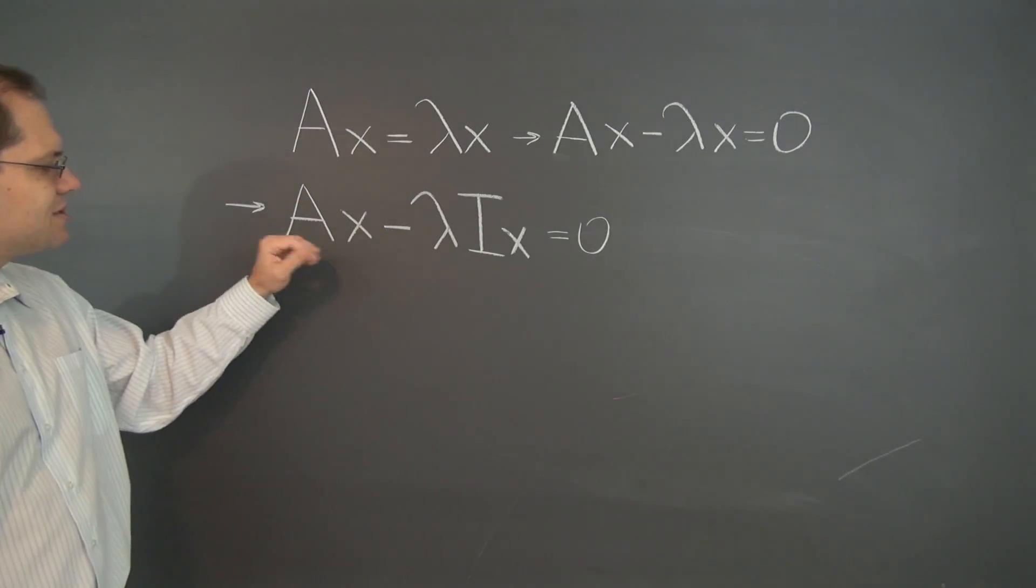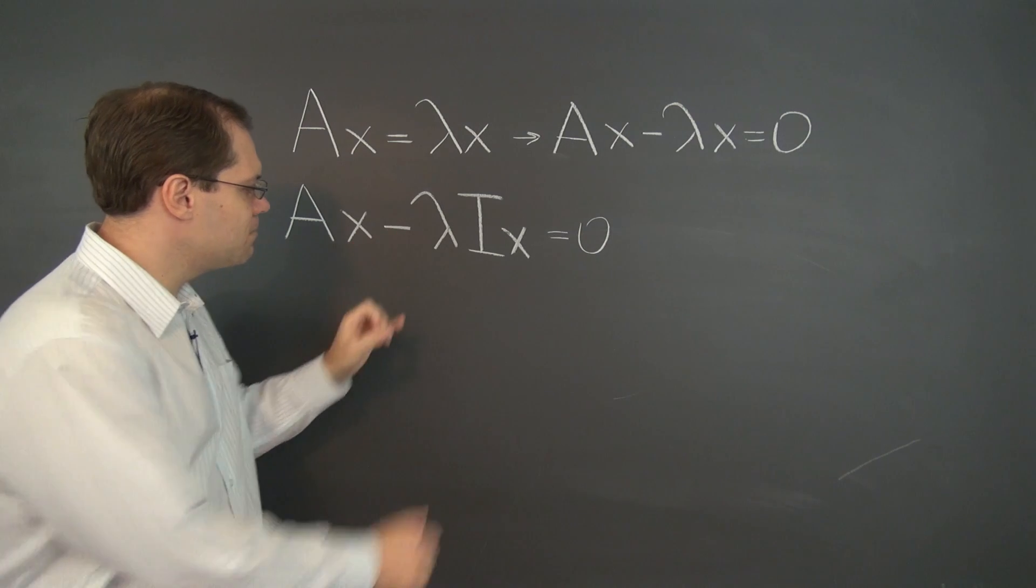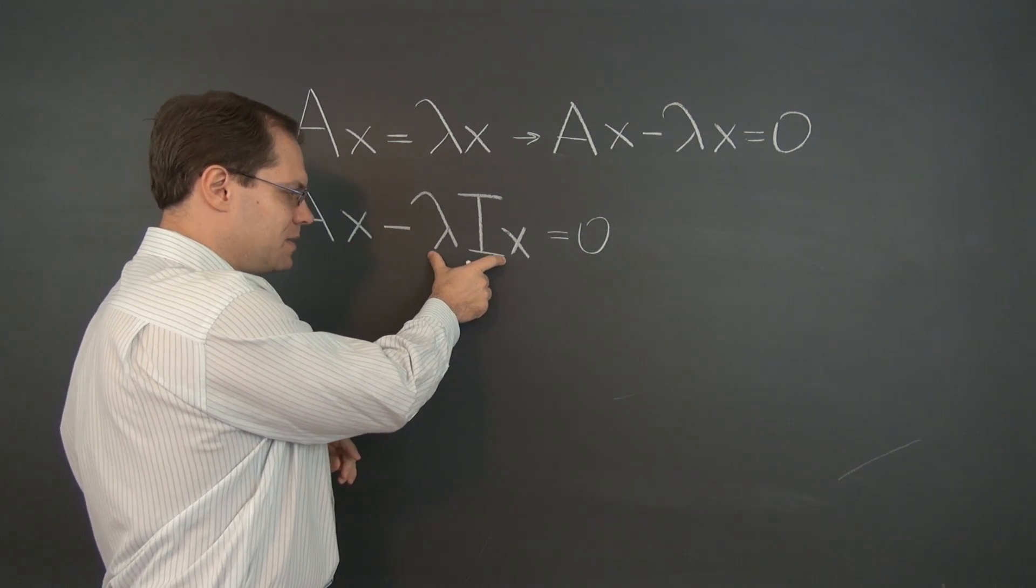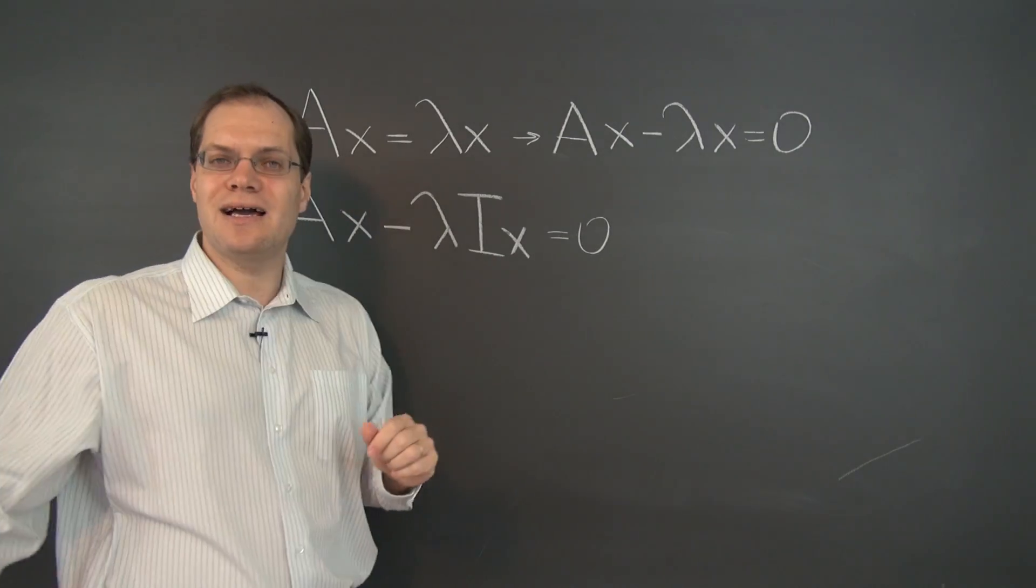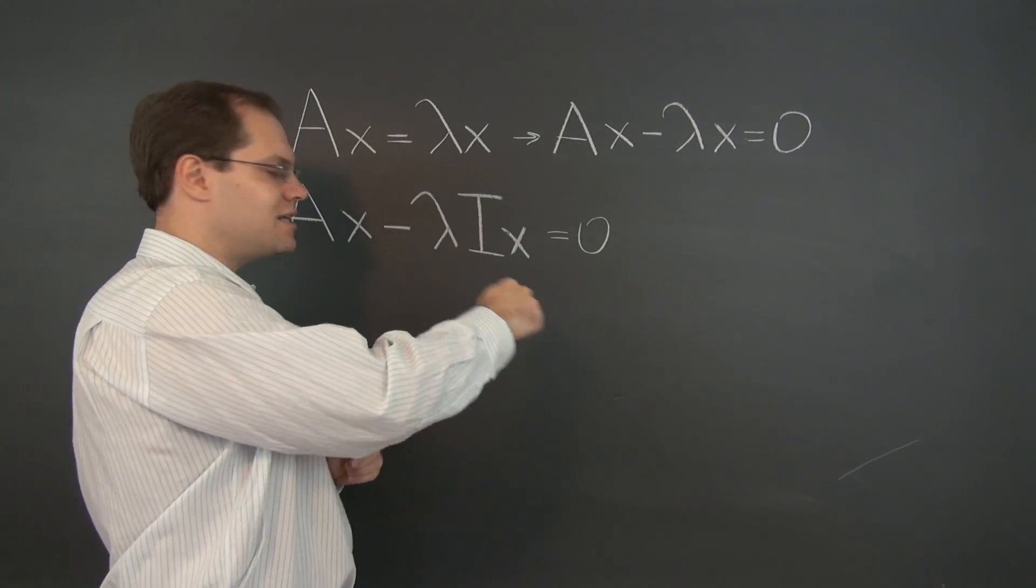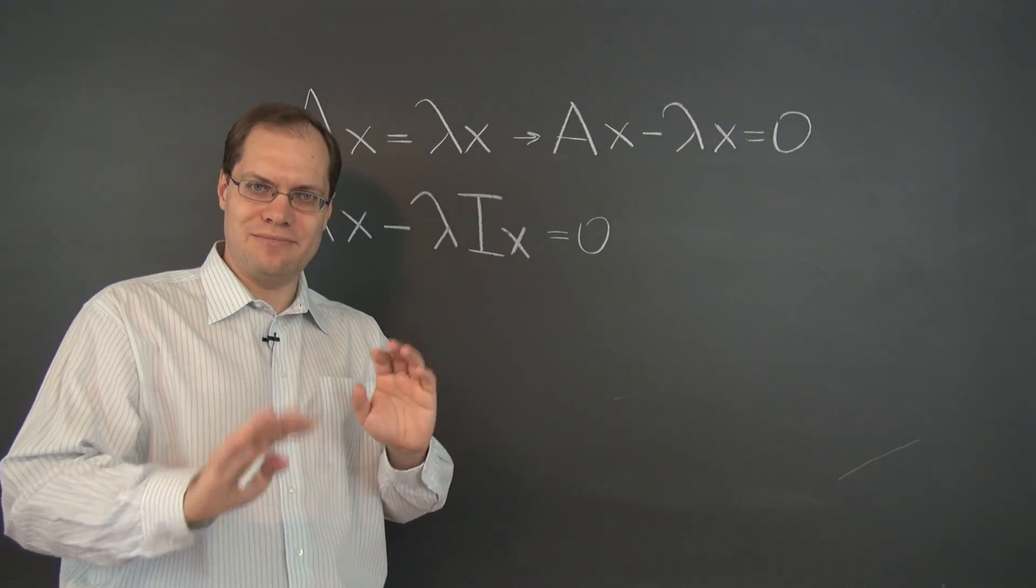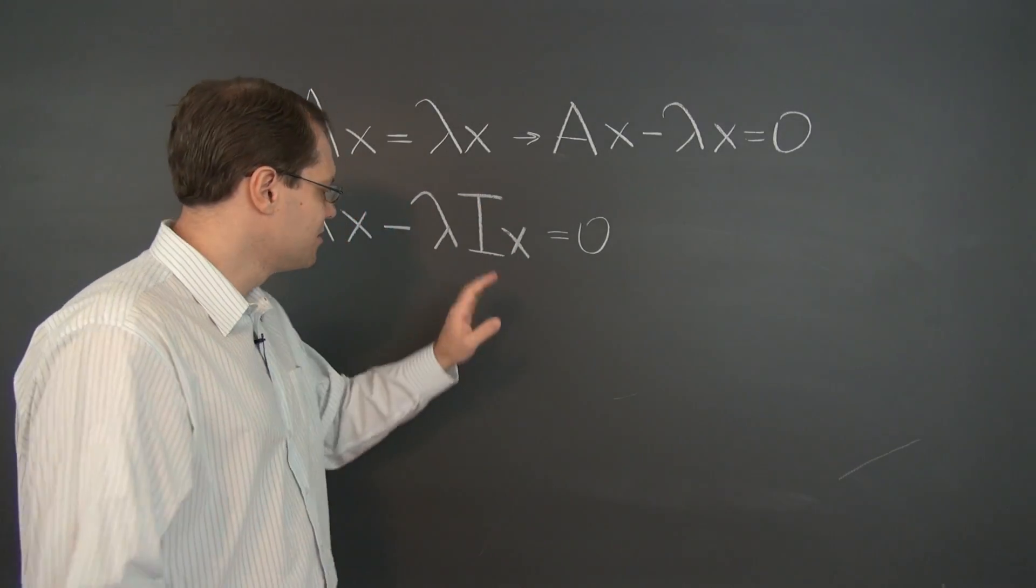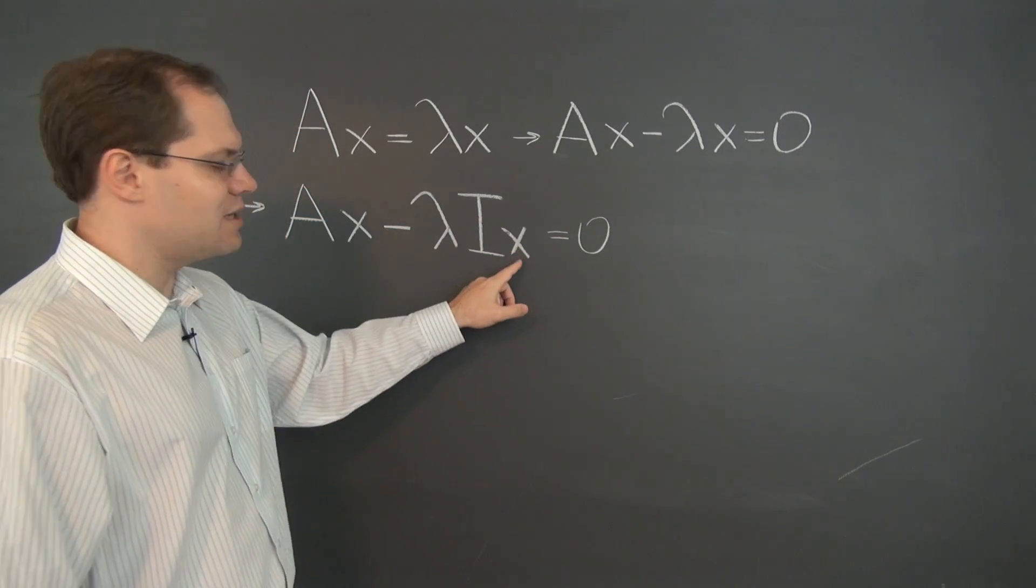So we now have this equation. And what's nice about this equation is that it's consistent in terms of shape. We have matrix times vector minus matrix. Think of this matrix as λ times I. It's a matrix with lambdas on the diagonal. I has ones on the diagonal, so λI has lambdas on the diagonal. Matrix times vector, so now when you factor out x, you have matrix minus matrix inside.